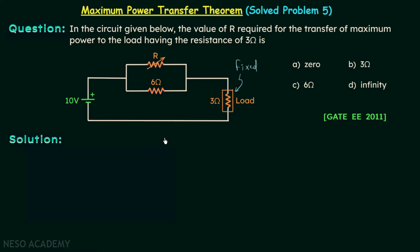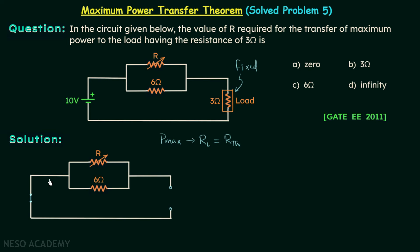We know in case number 1, the maximum power will get transferred to the load when it is equal to Rth of the network. I am going to solve this problem following that result. To find Rth, we will open-circuit the load and short-circuit the source. From the resulting network, Rth is equal to R in parallel with 6, which gives Rth = 6R divided by (6 plus R).